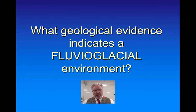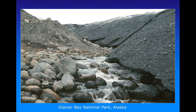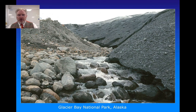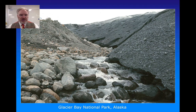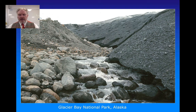A fluvioglacial environment involves deposition by rivers either underneath or at the end of a glacier. Here we can see the end of an ice sheet, with some dirty-looking ice on the right and glacial outwash — meltwater coming from the front of this glacier. If we contrast this sediment with what we saw from glacial deposition, we can see it is better sorted; fine material has been washed further downstream and the rocks are starting to show some rounding as they are moved by water.